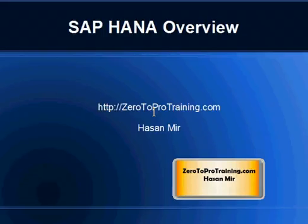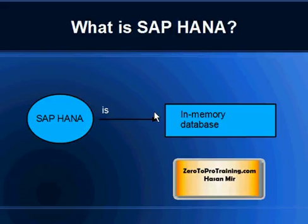The topic for this video is: what is SAP HANA? This is Hassan Mir from 02Protraining.com. In short, SAP HANA is an in-memory database solution from SAP AG. You can take my in-memory database video to find out more on this topic. In short, an in-memory database is very fast compared to the traditional database — about 10 times faster — because it keeps all the data in memory.